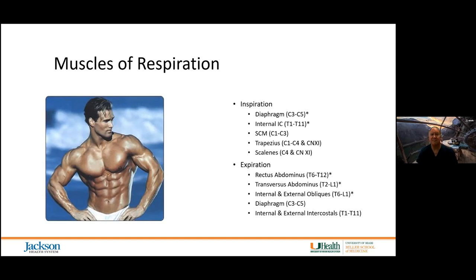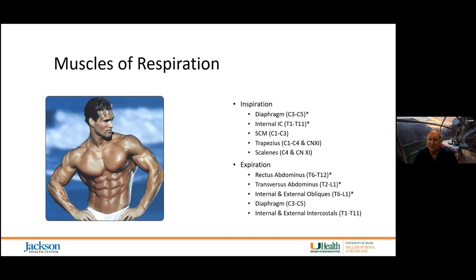Muscles of expiration are primarily passive — the diaphragm and intercostal muscles relax and we get a certain amount of expiration with that. But if you want to generate pressure, particularly for a cough to clear mucus secretions, then we activate the rectus abdominis, transverse abdominis, and internal and external obliques.